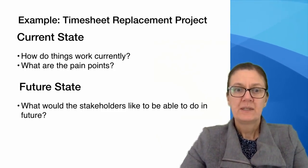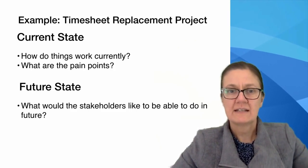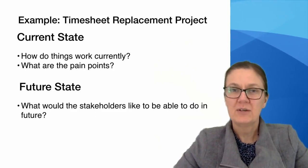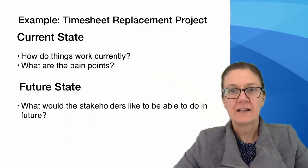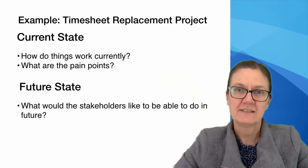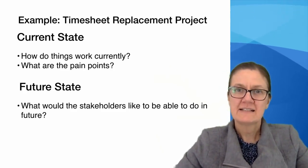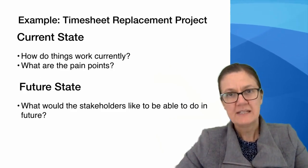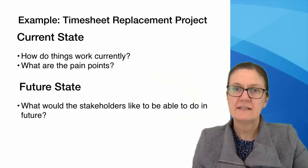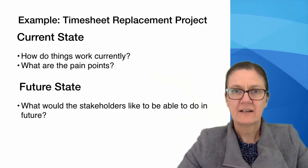In theory you should first understand the current state before you can understand the future state. However, in the real world we do get a lot of future state information even before we fully understand the current state. That is because stakeholders like to come to you and say they want the new system to do all their timesheets because it has great features. Your job and responsibility is to say that's great, but let me understand exactly what issues you currently experience. Sometimes problems haven't been fully defined before a stakeholder jumps to a solution they think might solve all their problems.